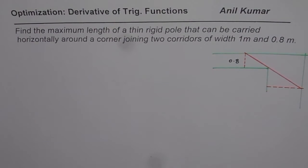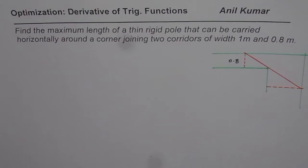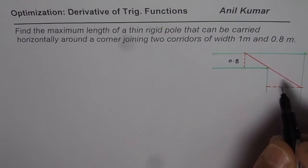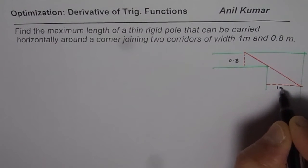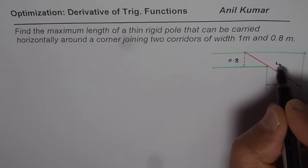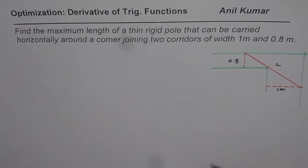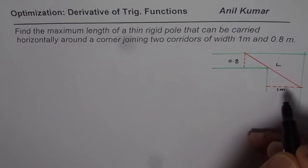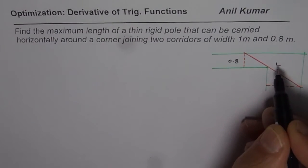I am Anil Kumar and here is a very interesting test question on optimization. We are using trigonometric derivatives in this particular example. The question is: find the maximum length of a thin rigid pole that can be carried horizontally around a corner joining two corridors of width 1 meter and 0.8 meters. We need to find the maximum length of this rod which could be taken through these corridors.